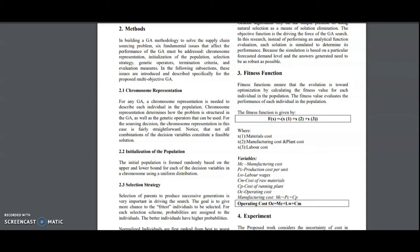In building a genetic algorithm methodology to solve the supply chain sourcing problem, six fundamental issues are represented. First is the chromosome representation, second is the initialization of population, third is the selection strategy, fourth is genetic operators, fifth is termination criteria, and then the evaluation measures. The following subsections will be dealing with that.